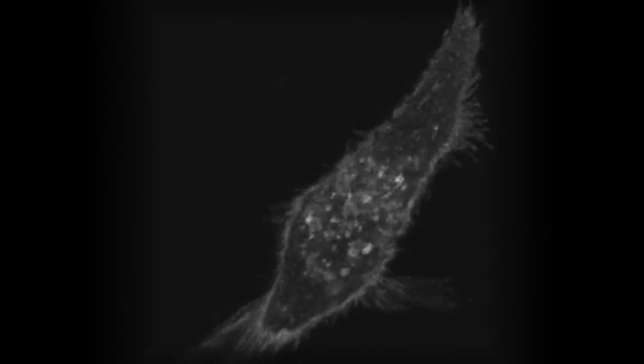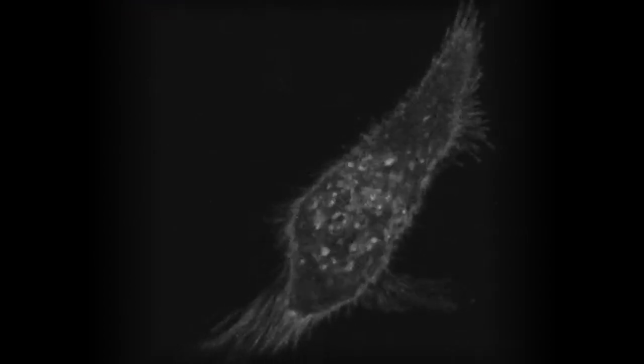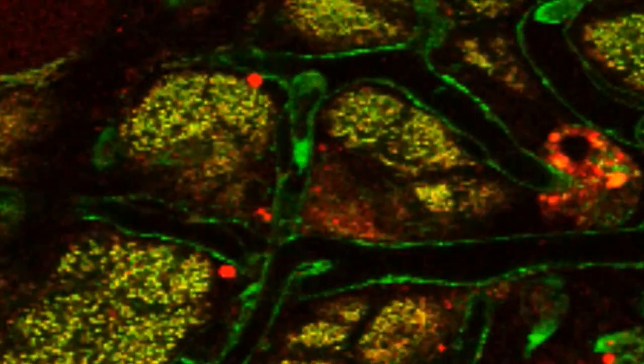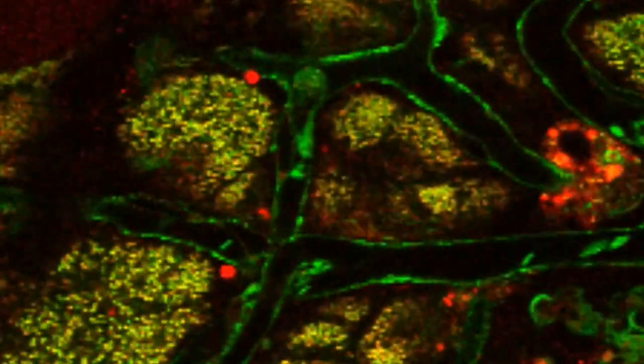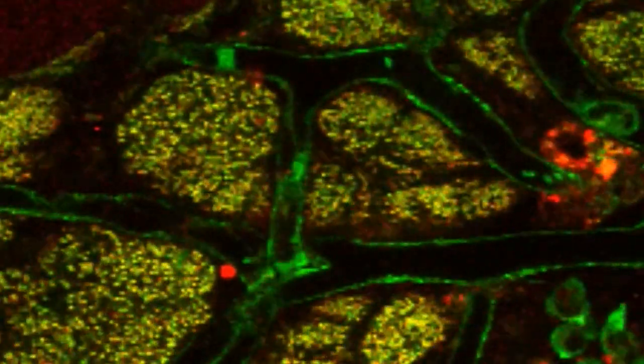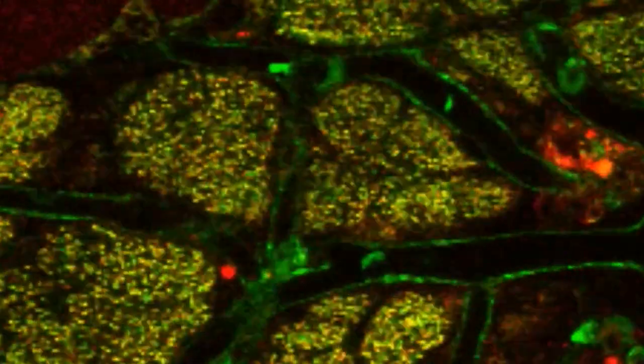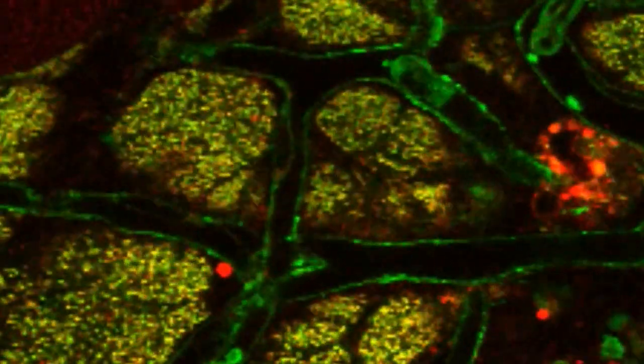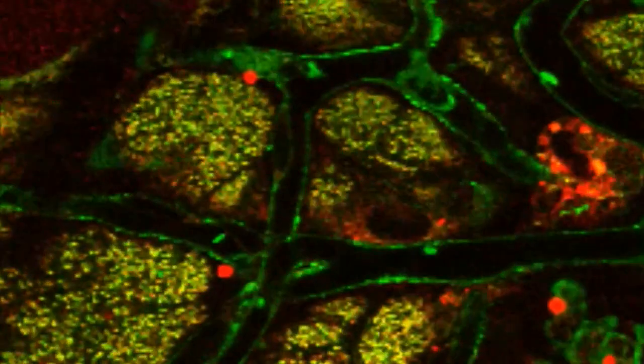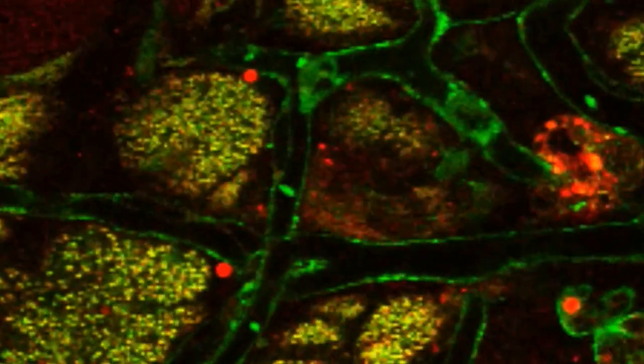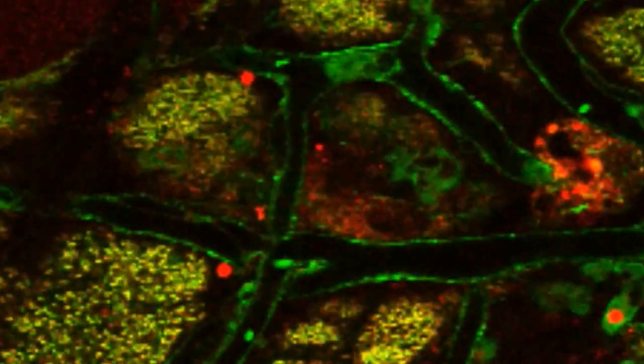Still, we always ask ourselves, how do cells behave in their native environment? They are surrounded by thousands of different cells, by blood vessels that provide their nutrients, and by the extracellular matrix that provides support. We now have the ability to look at them in living tissues.